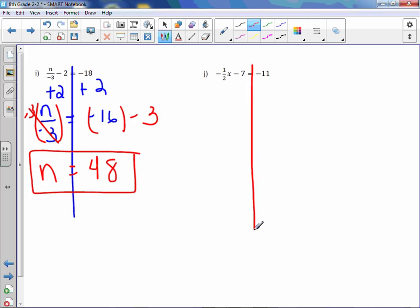Letter J. We need to get rid of the minus 7 first. So we will add 7 to both sides. Negative 1 half X equals negative 4. Multiply both sides by the reciprocal, which is negative 2 over 1.